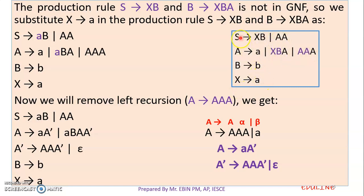Now we will ask for productions — we will see the productions. We will start by converting the form. S tends to XB. This is a production rule. We will see that we have a production of X. A tends to XBA. We will see each production: S tends to XB and A tends to XBA. If we have a replacement of X, we will replace X and try to apply Greibach Normal Form. Because X tends to a is a production, we replace a.